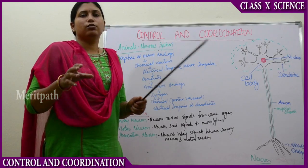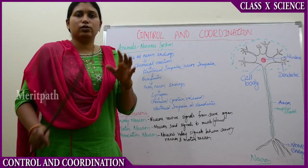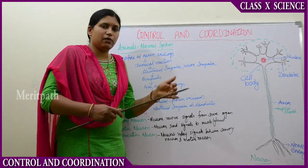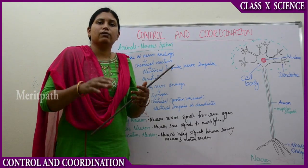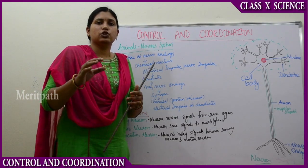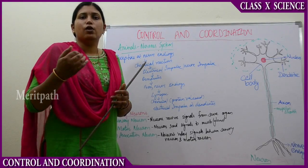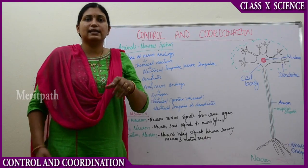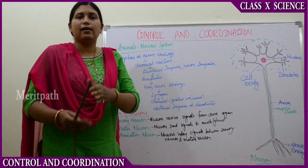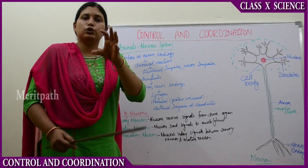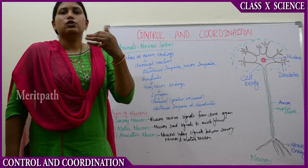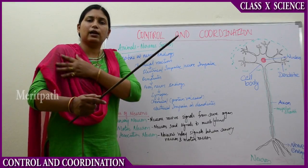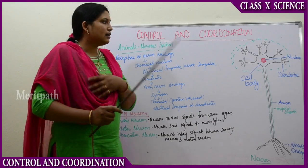Now that we have understood the structure of the neuron, let's see how the nerve impulse is transmitted. When we touch an ice cold object, we remove our hand back. The brain sends signals to our hand and we remove the hand because the object is extremely cold. So how does this message transfer actually occur?